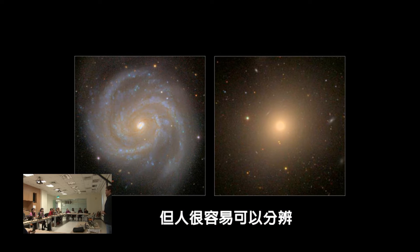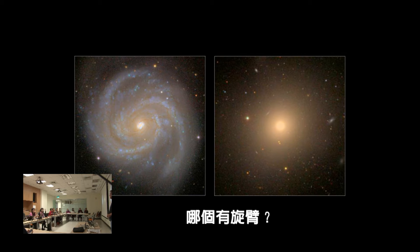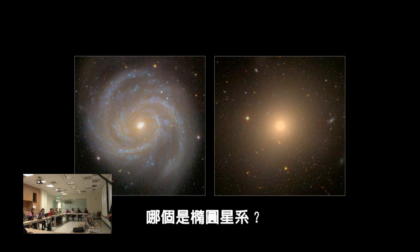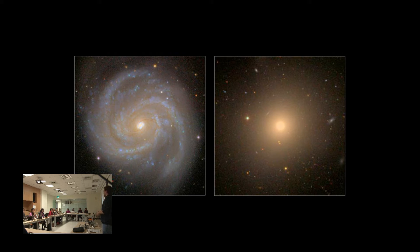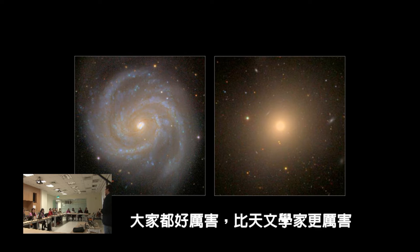But people are quite good at it. These are two galaxies here — one is called a spiral galaxy and one is called an elliptical galaxy. Who thinks this one is the spiral galaxy? Who thinks it's an elliptical galaxy? You guys are now as good as most astronomers at this task. People are really good at understanding very fuzzy questions like this — questions that are hard for computers to understand.